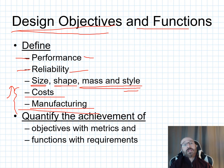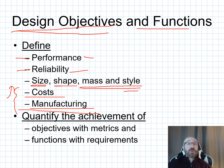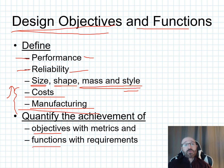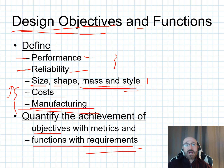Quantifying the achievement of objectives with metrics and functions with requirements is very important. If you quantify your objectives with metrics, you can go back, relate to them, and see what worked and what didn't. Functions with requirements relates back to performance, reliability, shape, size, and all those factors — does it still function correctly meeting all these different requirements?